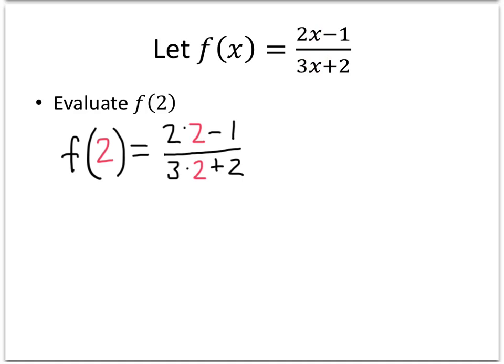And now all we need to do is simplify. So on the top, 2 times 2 is 4, 4 minus 1 is 3. And on the bottom, 3 times 2 is 6, and 6 plus 2 is 8. So 3 over 8 is our answer.